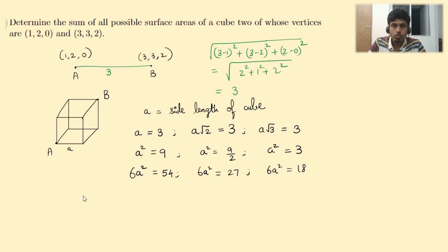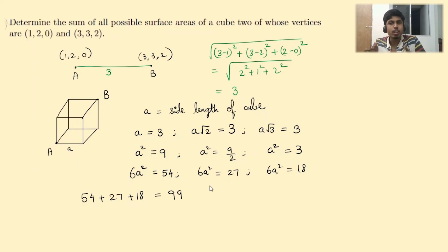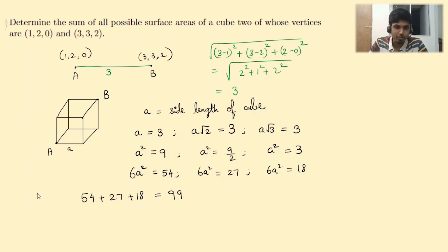Adding up all the possible surface areas: 54 + 27 + 18 = 99. So the answer is 99, which is the largest possible number that can be a solution in IOQM.